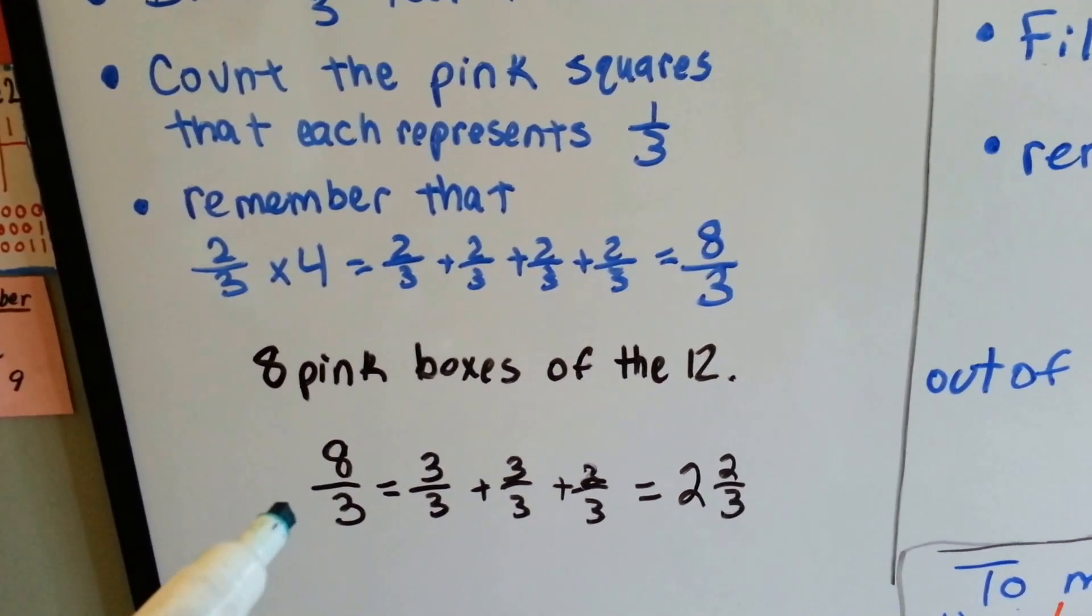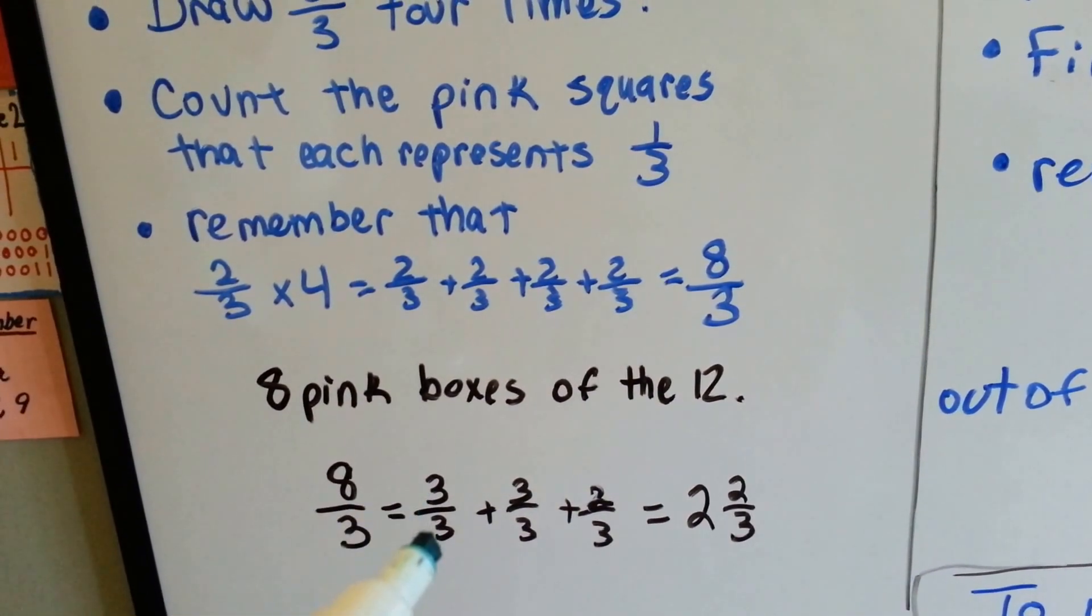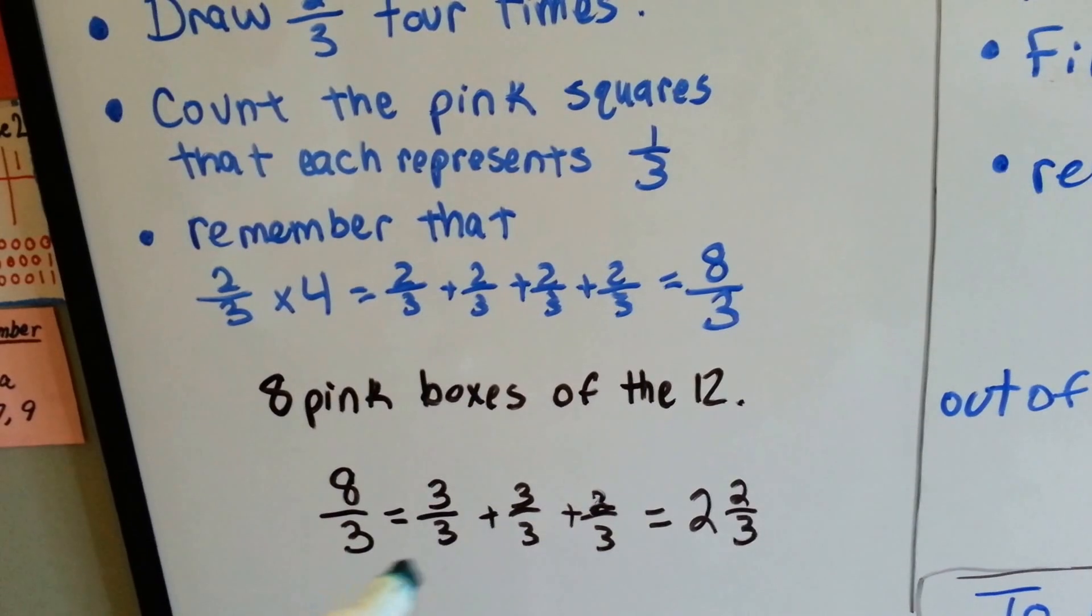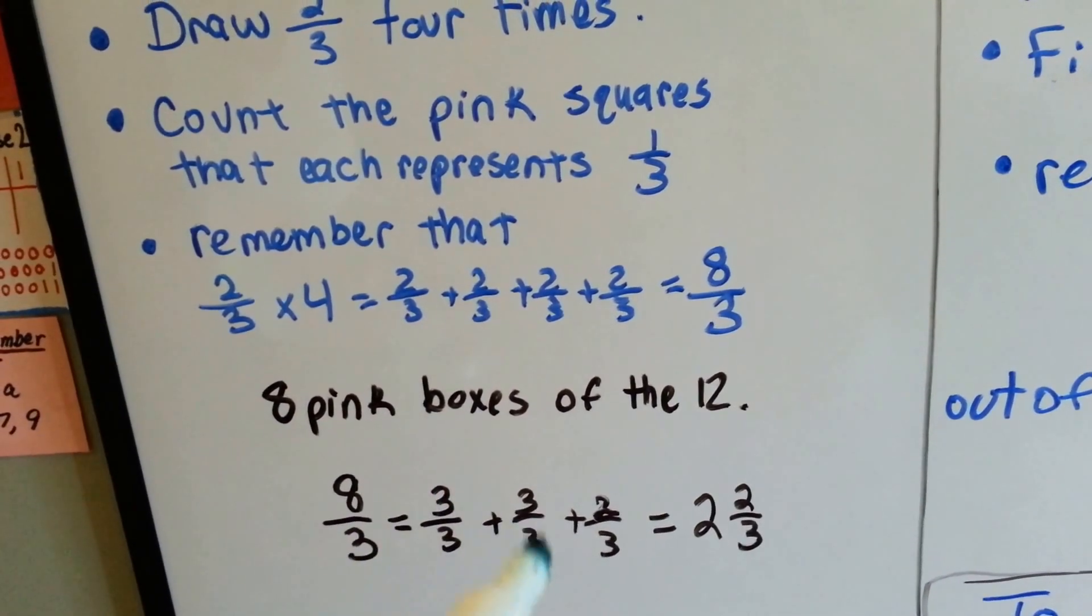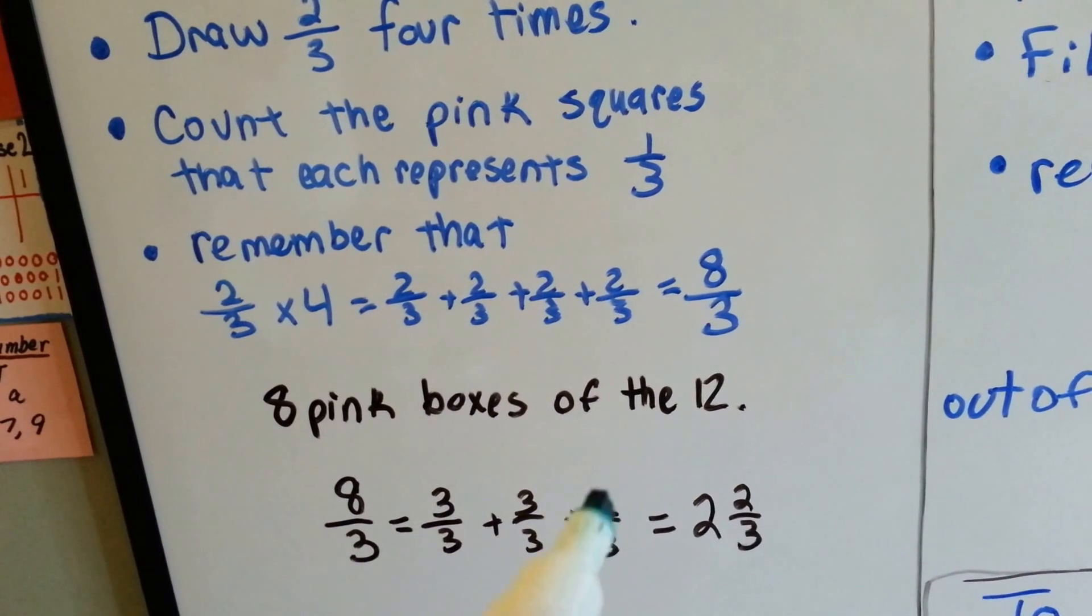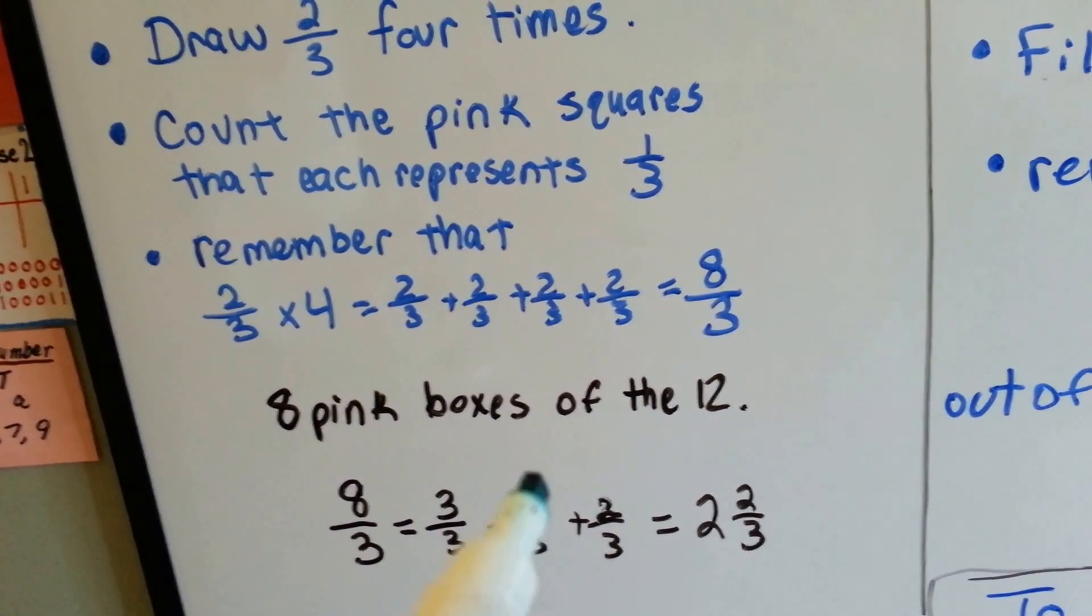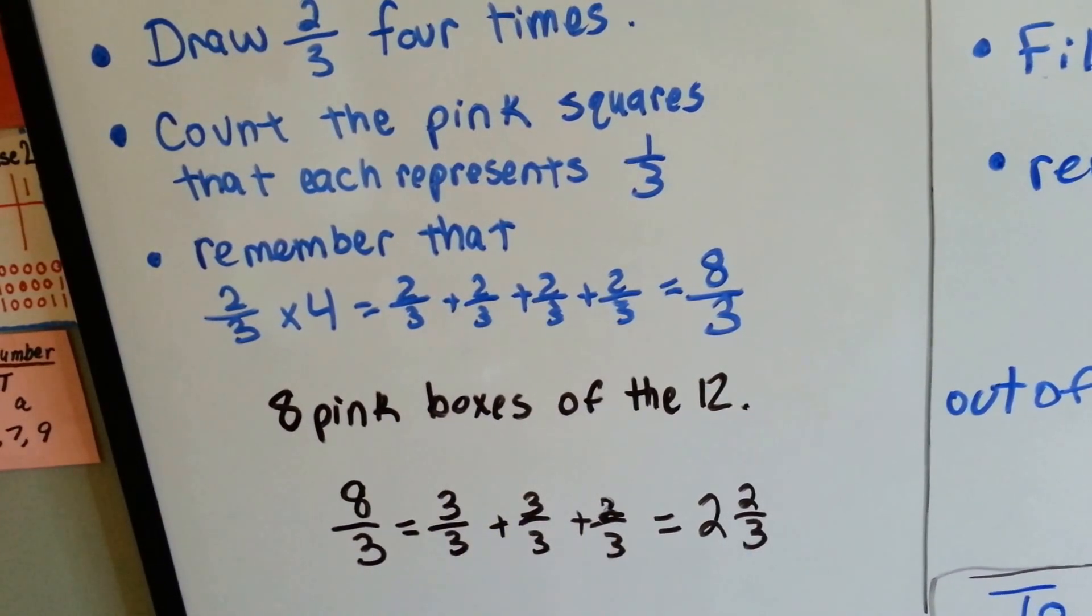When we have eight-thirds, it's an improper fraction. And we know that three-thirds is equal to one. How many can we pull out of here? Three-thirds and three-thirds, that would be six. And then a two-thirds would be seven-eight. So we have one whole, two whole, and two-thirds. So two and two-thirds.